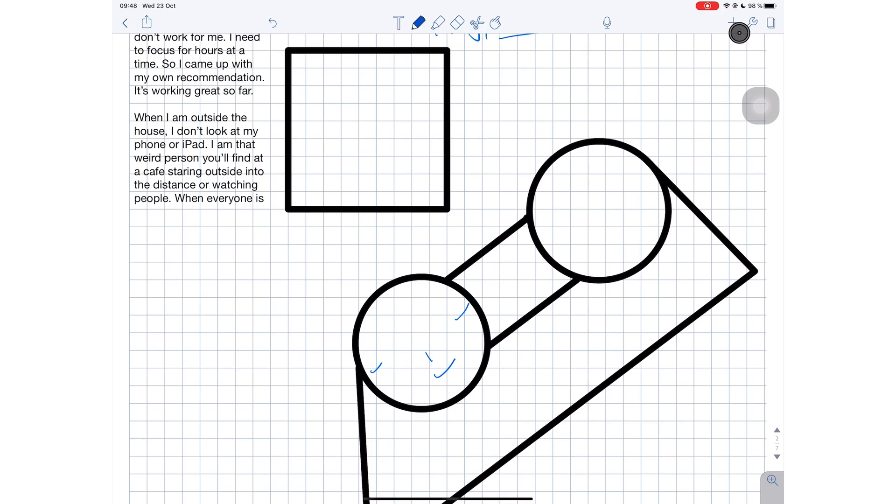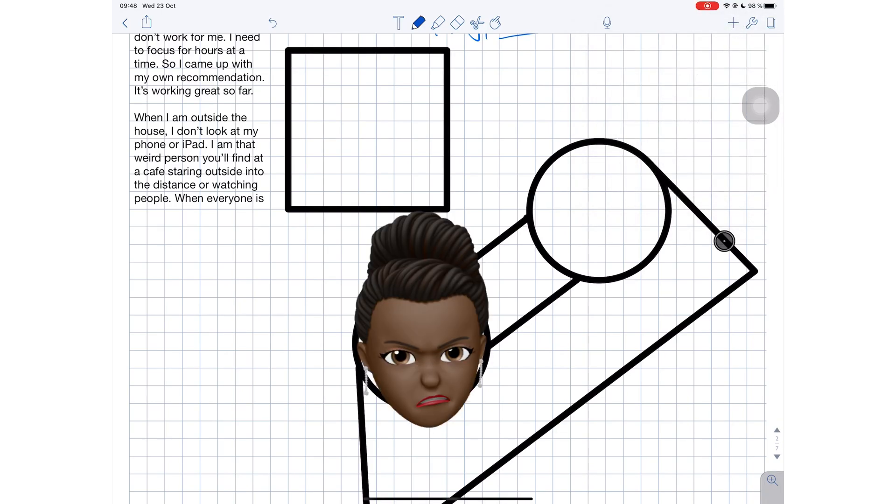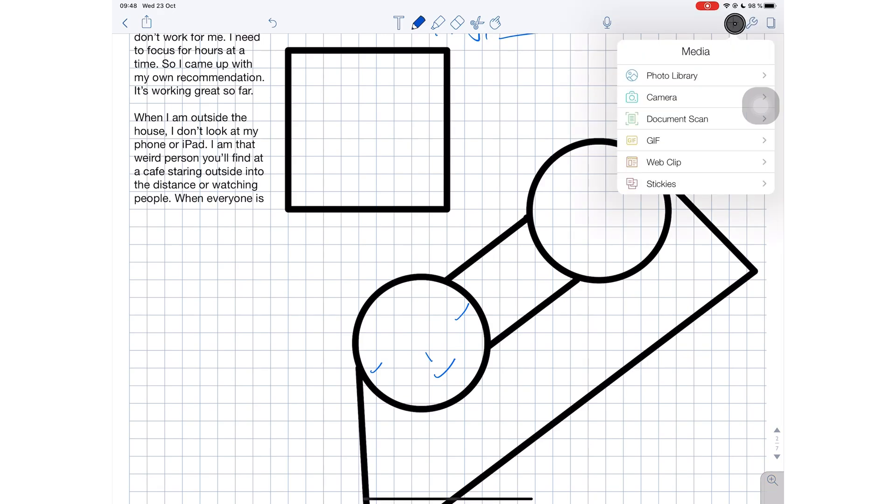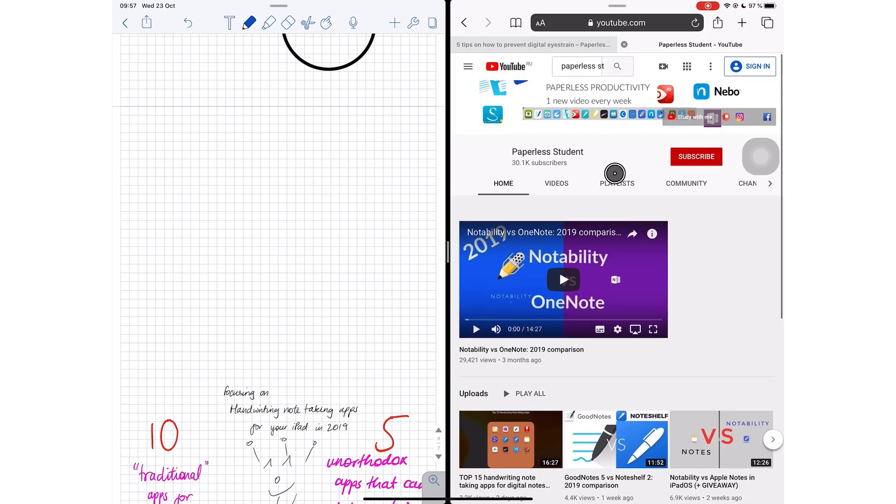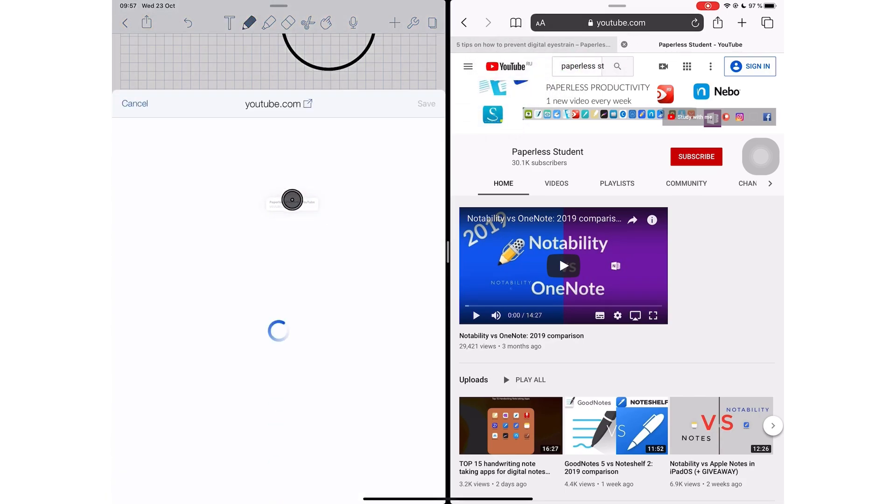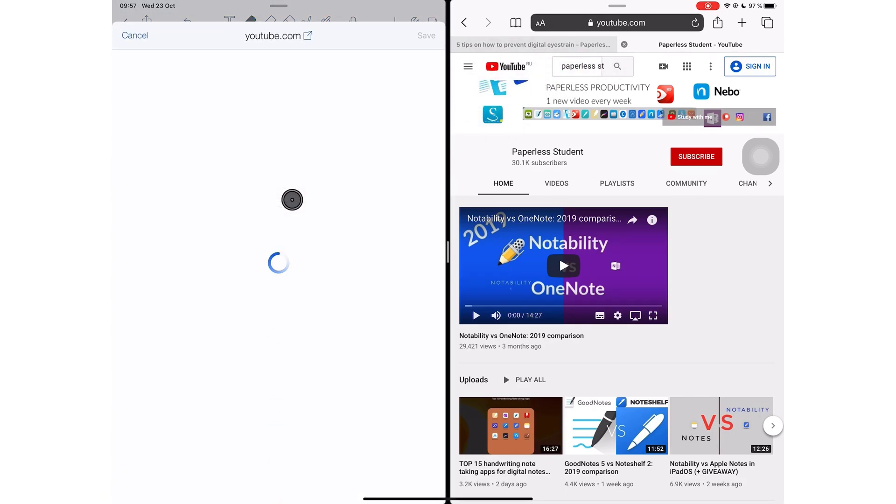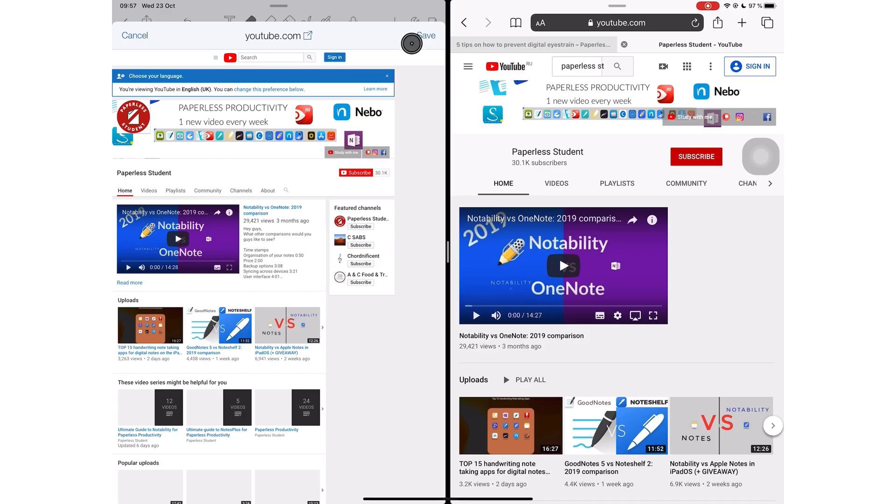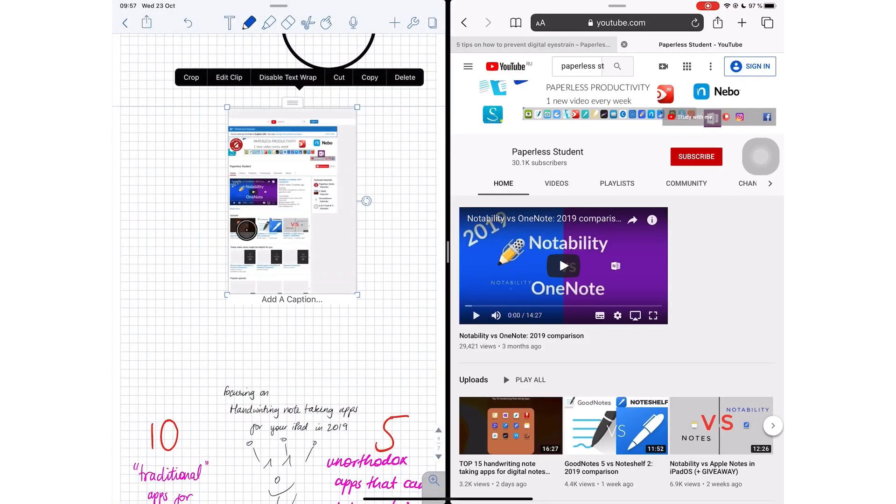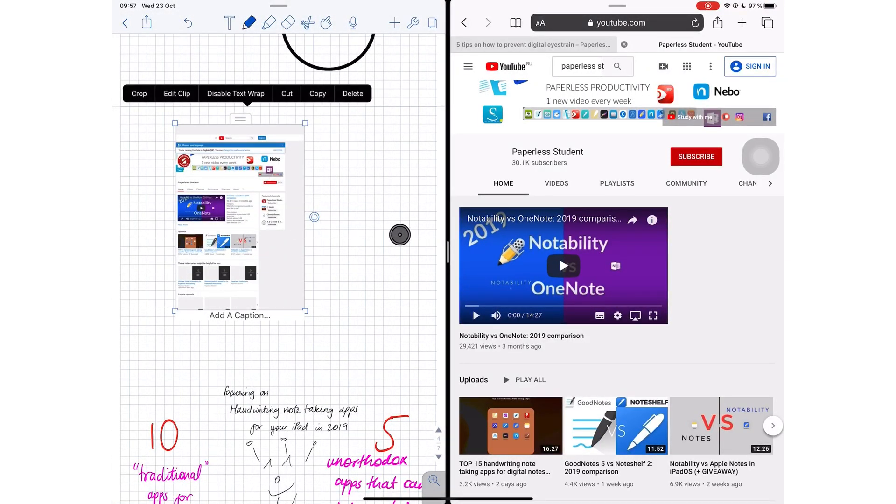The next thing I want to talk about is the web clipper in Notability. In my opinion, it's changed for the worst. The whole point of having this feature in the application was so I don't have to leave the application. Now I have to drag and drop a webpage from Safari. I wish Notability could just stop fixing things that are not broken. I really dislike the changes they've made to this tool because this drag and drop feature defeats the whole purpose of having a web browser within the application. I could officially say that Notability now no longer has a web browser within the application.